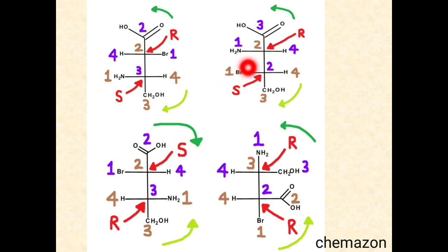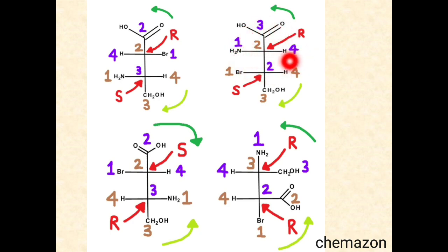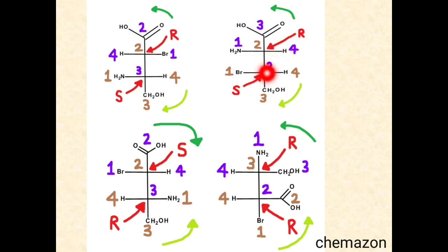Looking at option B, doing the same exercise, from 1 to 2 to 3 it is anti-clockwise but the fourth priority group is on the wedge or horizontal, so the configuration is R. At the third carbon, from 1 to 2 to 3 it is clockwise, so the absolute configuration is S.